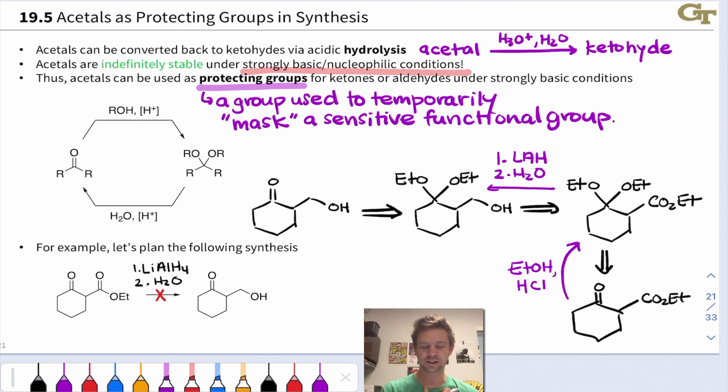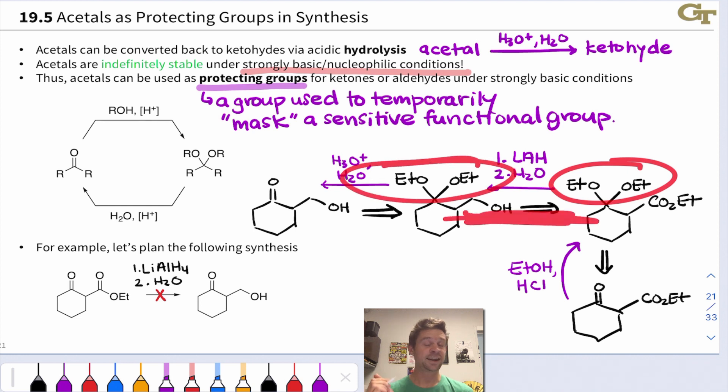That reduces the ester to an alcohol. Then finally, in the last step, we can get that ketone group back by hydrolyzing the diethyl acetal back to a ketone. We see how this diethyl acetal group was critical as a protecting group, particularly at this stage where if that was a ketone, problematic reactivity would have taken place. Conversion to the diethyl acetal got us around that issue.